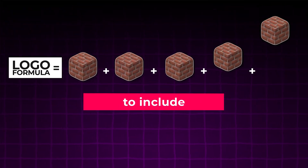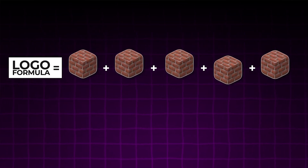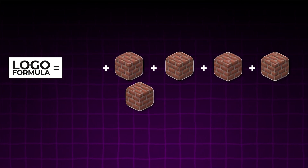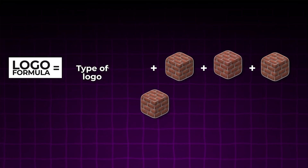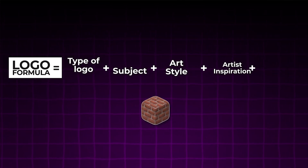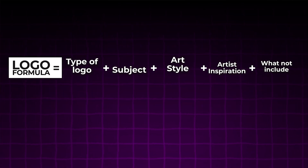Let's get into the good stuff — the formula. Whether you're using Midjourney or any other image generation tool, there are five key elements that you want to include when prompting for logo design. This formula works because these elements work together to create a logo that's not just visually appealing but also perfectly aligned with your brand vision. The five elements include the type of logo, the subject, the artistic genre or movement, inspiration from famous designers, and specifying what you don't want in your logo. Including each of these elements in your prompt will give you really great results.